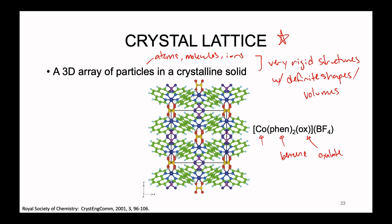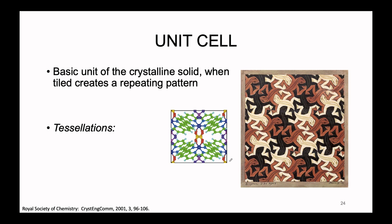Due to the complicated nature of this structure and how many atoms are present inside the total comprehensive structure, it can sometimes be nice to just pick out a small section — which we can see boxed here — that represents a small snapshot of what the big picture is. This we call a unit cell. It is the basic unit of a crystalline solid that, when tiled, creates a repeating pattern that looks just like the large comprehensive solid.